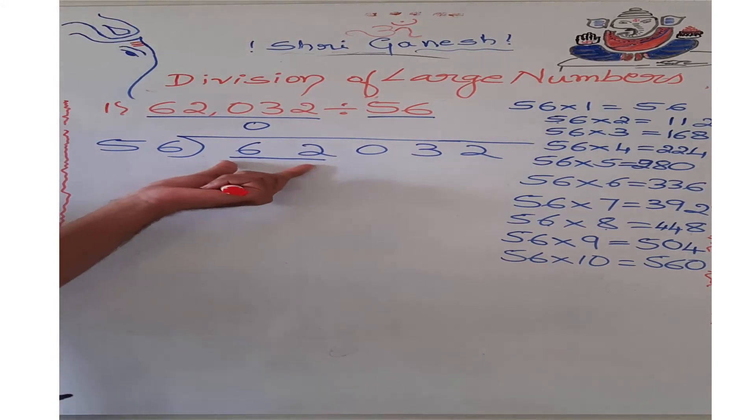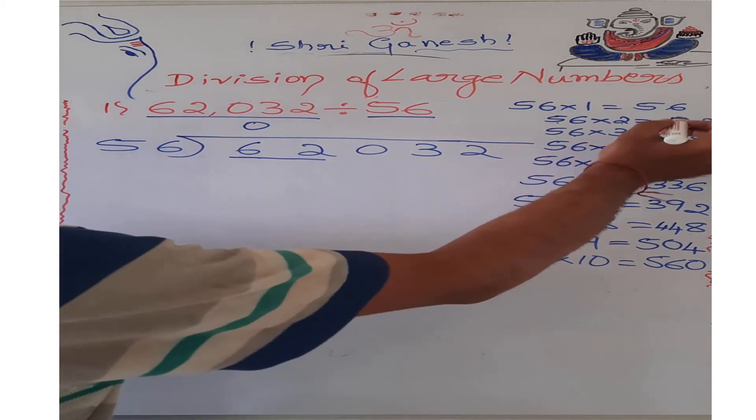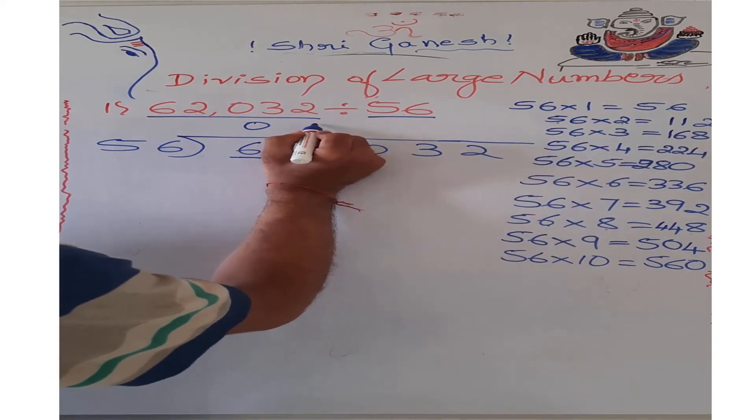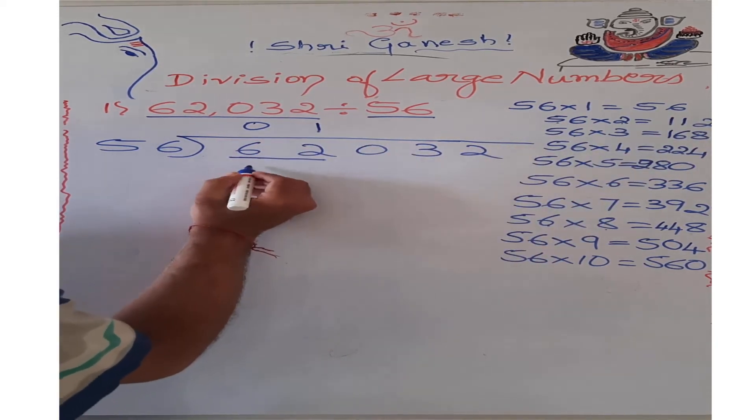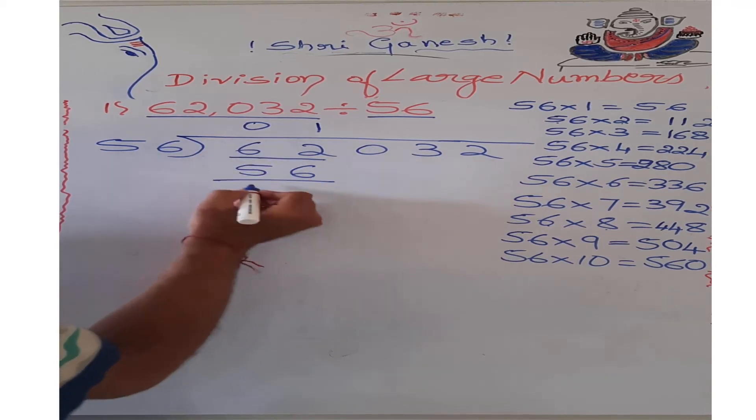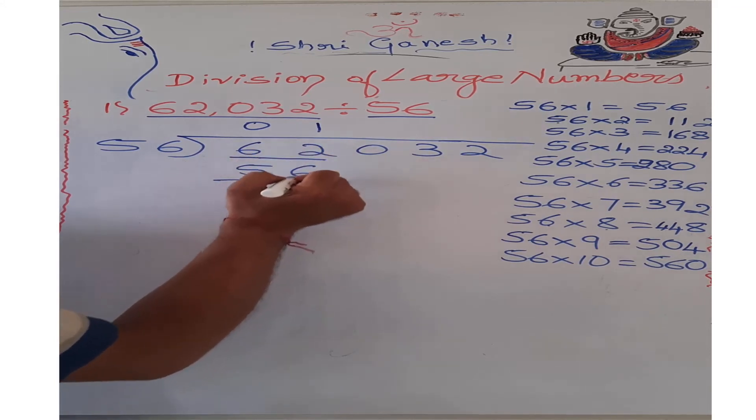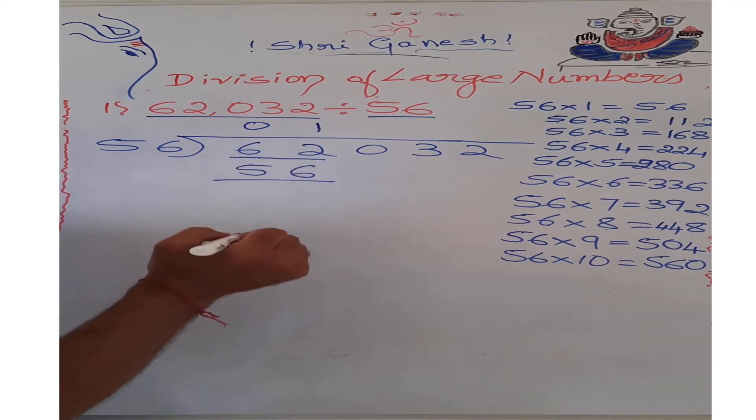If I take 2 digits at a time, it forms the number 62. The nearest multiple is 1. 1 I wrote which means 56. After subtracting this one, I will get 2 minus 6. 2 is smaller, 6 is larger, therefore it is not possible.